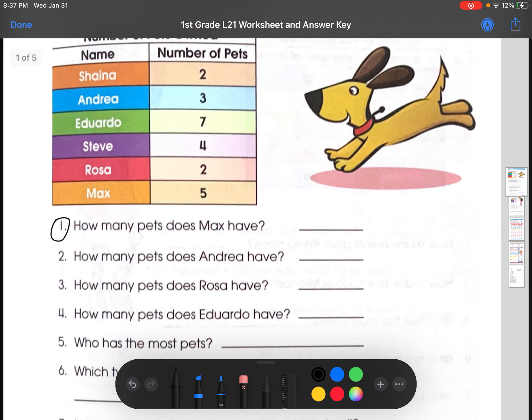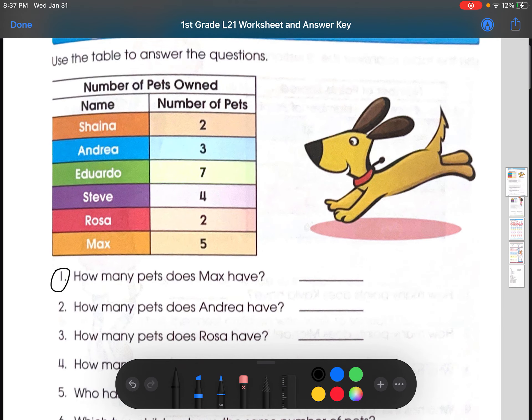Use a table to answer the questions. Let's go straight into it. Number one, how many pets does Max have? So, we did go over tables last time. If we just look at the name, we look for Max. I'll highlight it right here. And we just go to the corresponding box. So, five is the answer.